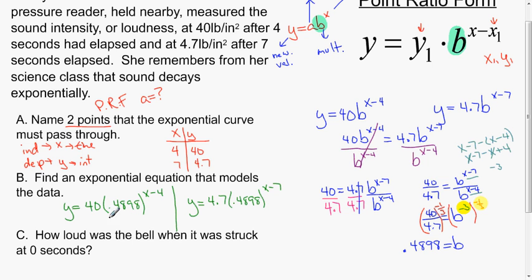The question in part C is: how loud was the bell when it was struck at 0 seconds? This is a very straightforward question. They're saying that t equals 0 or x equals 0, just plug in 0. Which function? It doesn't matter. You're going to get the same thing regardless of the function that you use.